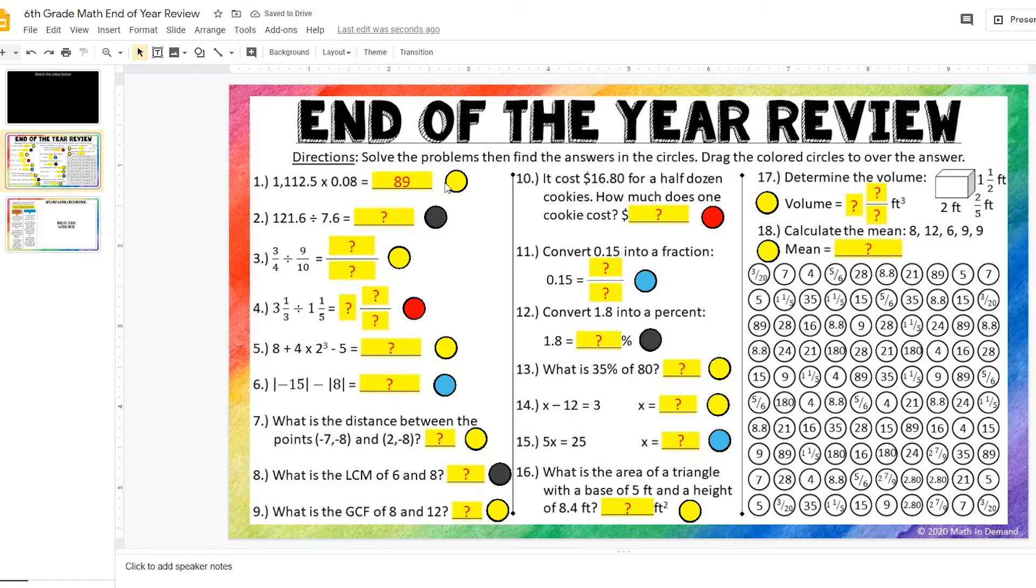I am going to grab the circle that is next to it. And you can see I have a yellow circle. And I am going to take it over to everywhere that I see 89. So here I see 89, so I am going to place it right there.